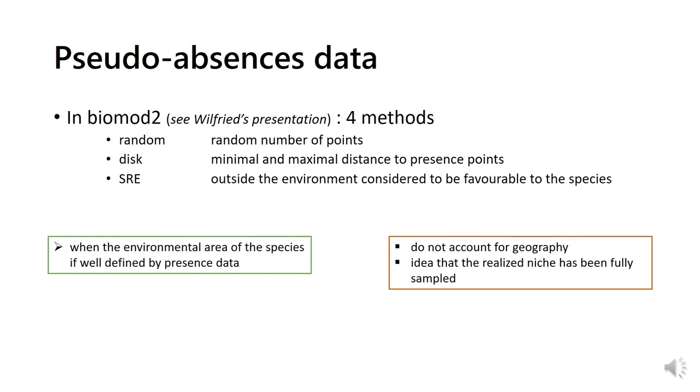Finally, the surface range envelope model selects pseudo-absence points outside the environment considered to be favorable to the species, meaning the environment defined by the present data. This time, it means that the environmental area of the species has been fully sampled, otherwise models will increase the bias included in the present dataset.